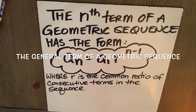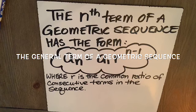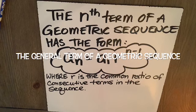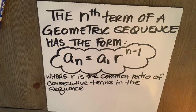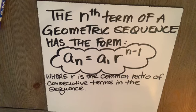The nth term of a geometric sequence has the form an, the general term, is equal to a1, the first term, times r to the n minus 1. What is r? r is the common ratio of consecutive terms in the sequence.